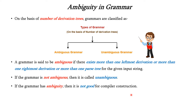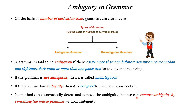If the grammar has ambiguity, it is not good for compiler construction. But there is no method which can automatically detect and remove the ambiguity. The only technique is we can remove the ambiguity by rewriting the old grammar without ambiguity.